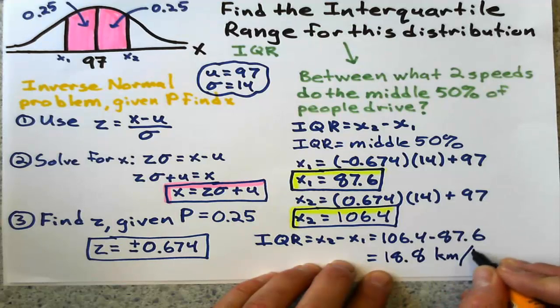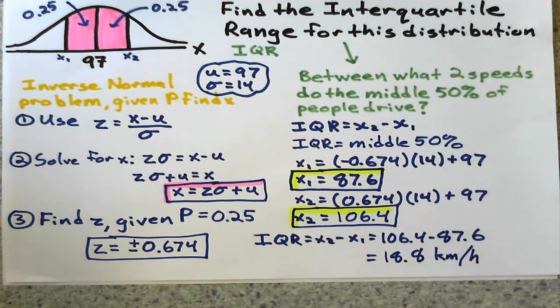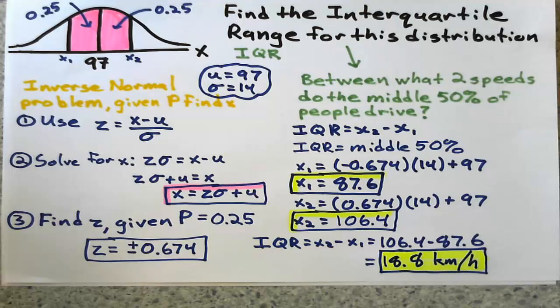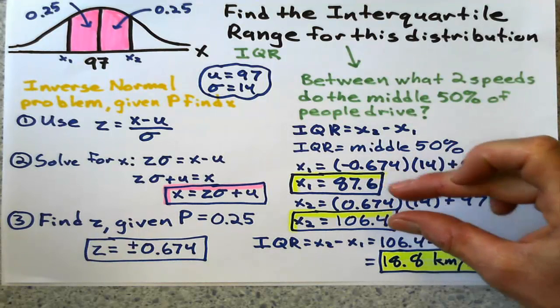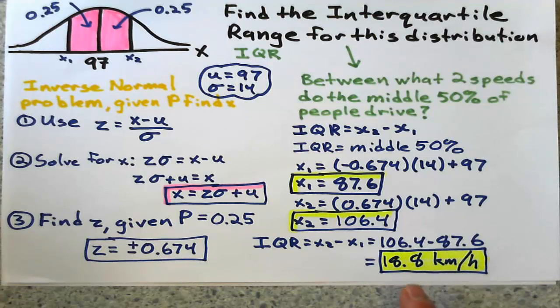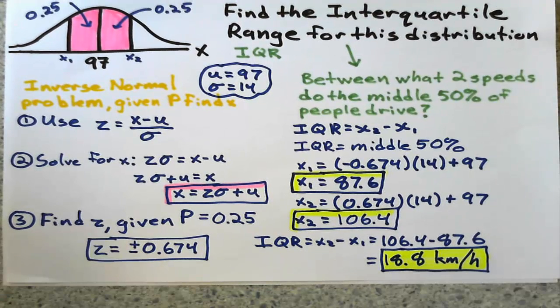For my final answer, we could say that 50 percent of these drivers drive between these two speeds, and so the interquartile range is almost 20 kilometers an hour. That's it for now, good luck.